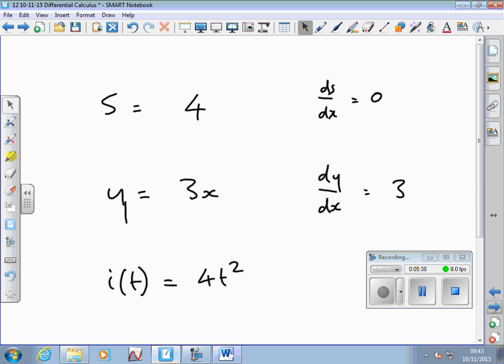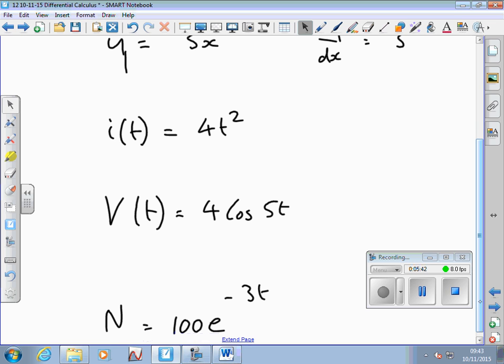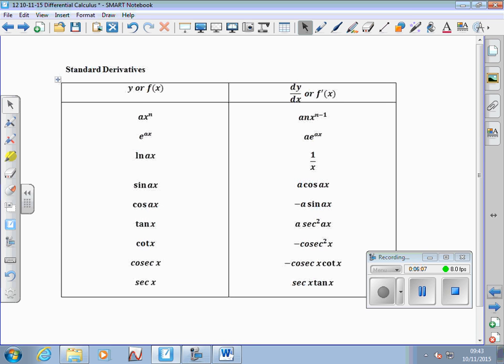Next example. Now we start getting into using our table. So the first thing, the notation is, well, I'm using the i bracket t notation for the function. So for the differential, I'm going to use i prime t, the differential. And then I use my table of differentials. So let's have a look at how it works. This is the rule that I'm applying here. And if we look at it, what it's saying is, if we look at the original function, and think of our example, what is our example? It's 4t squared.